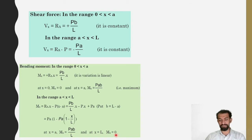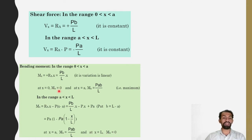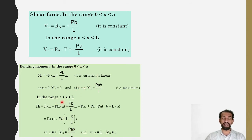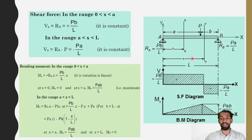So the two conditions give: starting at 0, ending at 0, and at x equals a the moment is P·a·b by L in both regions. The first condition is x from 0 to a, the second is x from a to L. The bending moment diagram is triangular in shape, and the shear force diagram shows constant values in each region.